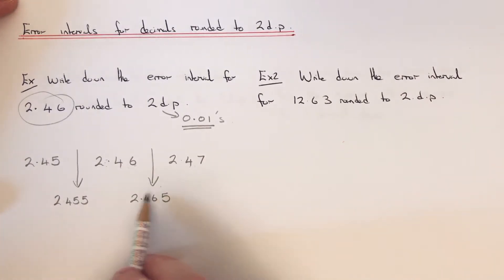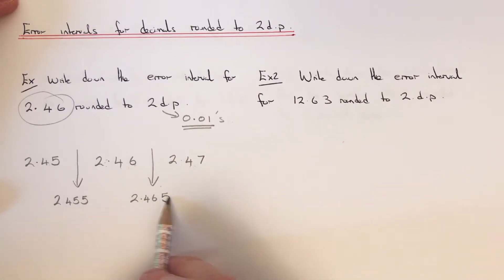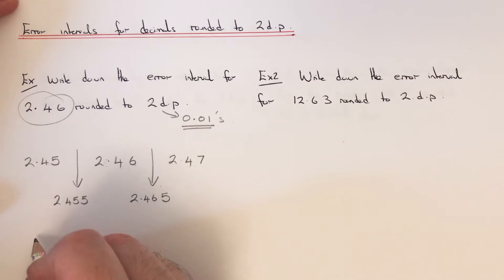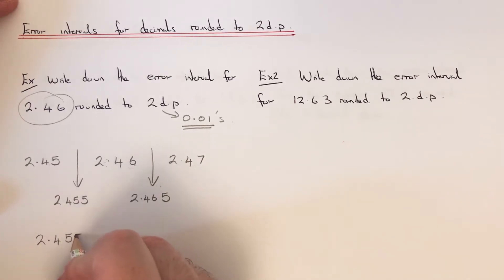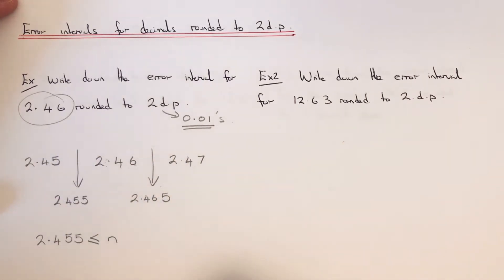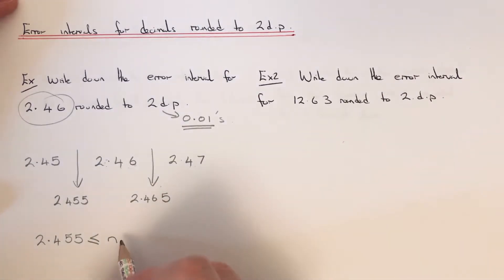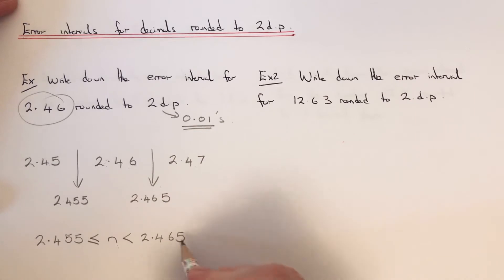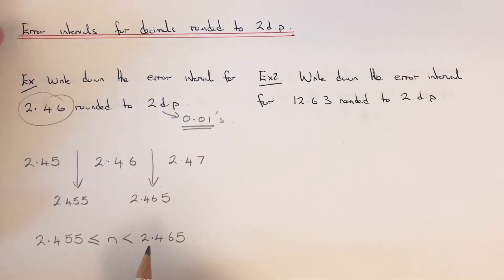These two numbers are the lower bound and the upper bound, so we just need to write down our error interval. Put the lower bound first: 2.455, then a less-than-or-equal-to sign, then the letter n in the middle — it was just a number rounded off to two decimal places; usually the question tells you what letter to use — then a less-than sign, and then the upper bound at the end: 2.465.